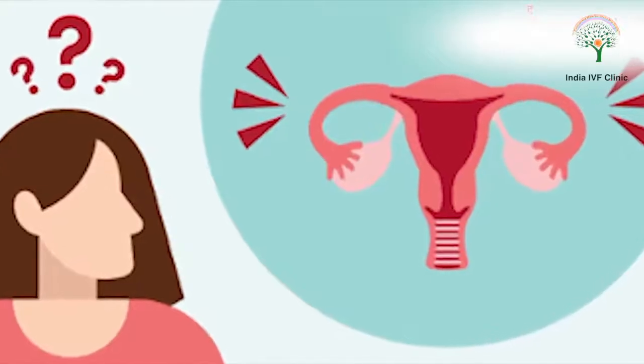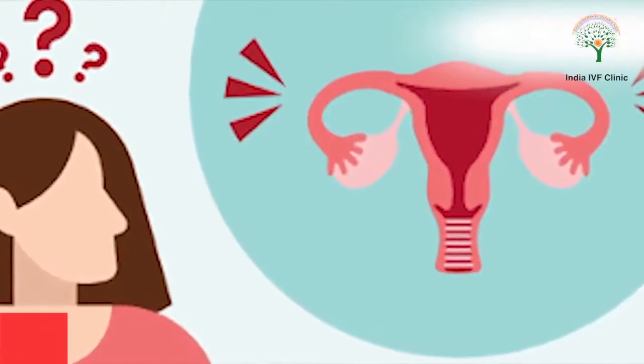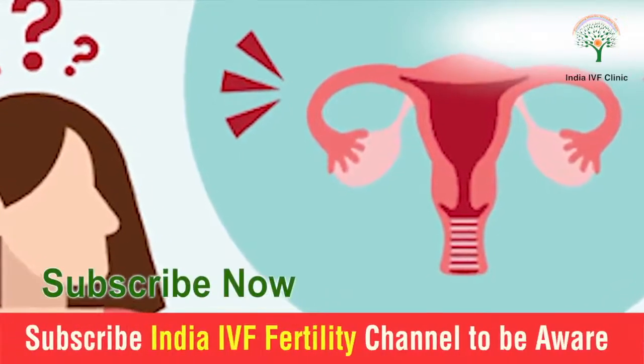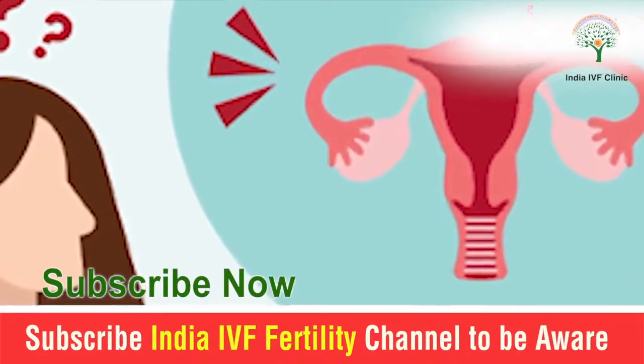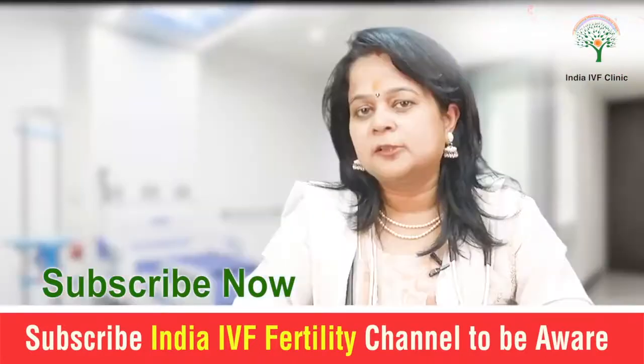It spreads and gets into the entire pelvic area. It becomes like a form of termite — just as termites don't leave a structure, endometriosis does not leave you either. Because it is on the ovaries, it slowly starts to damage them, leading to poor egg quality and declining AMH levels.